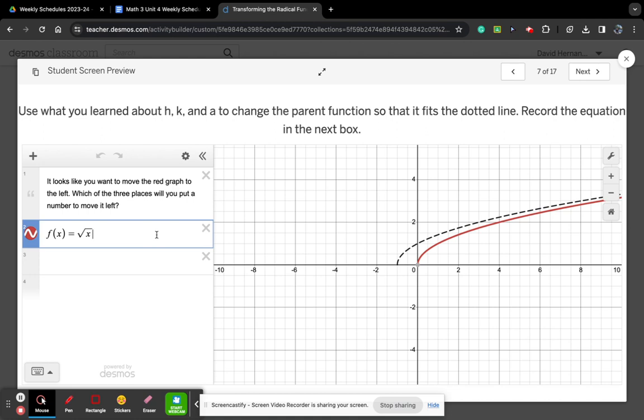And so now the question is, where do we put the one? If I put plus one, notice that it shifted the red graph up one, because this is not under the square root. So it is K, which moves it up or down. If I make it minus one, it moves it down.